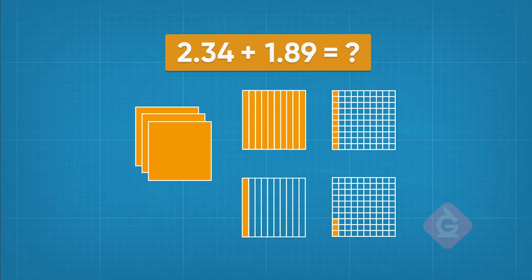In total, we now have 3 wholes, 11 tenths, and 13 hundredths. Correct. How would you write this answer as a decimal?